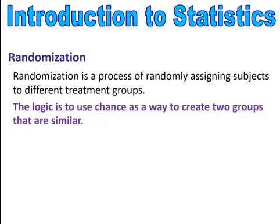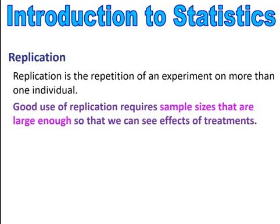Randomization is the process of randomly assigning subjects to different treatment groups. The logic is to use chance as a way to create two groups that are similar. Replication is the repetition of an experiment on more than one individual. Good use of replication requires sample sizes that are large enough so that we can see the effects of the treatment. When you're doing statistical studies, you want larger samples so that you can get better results.